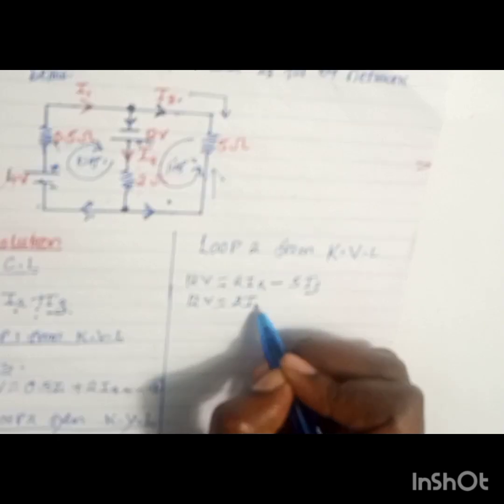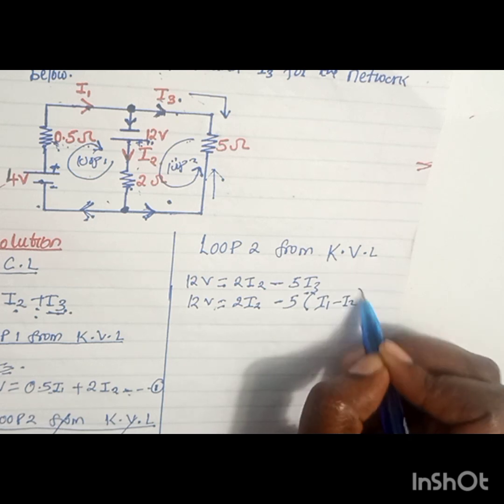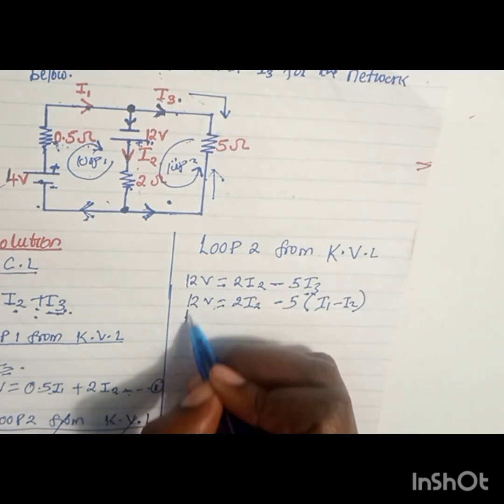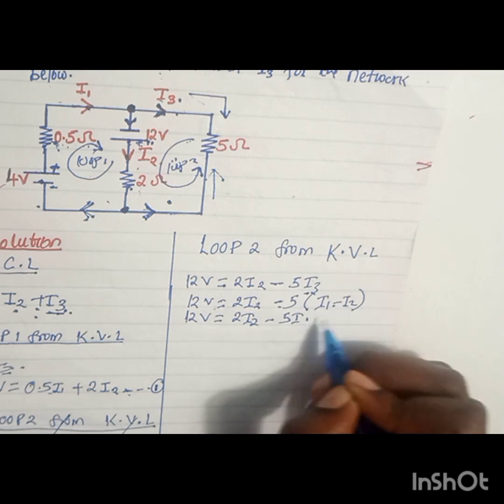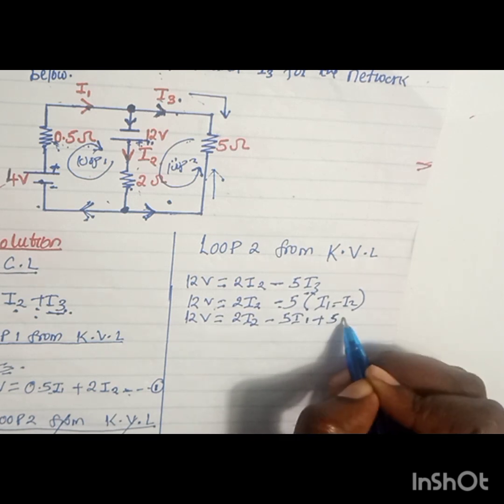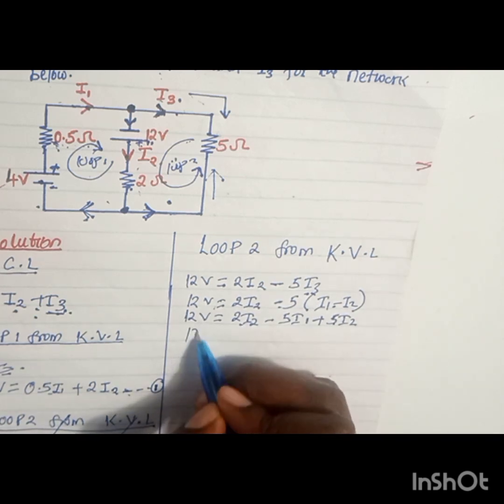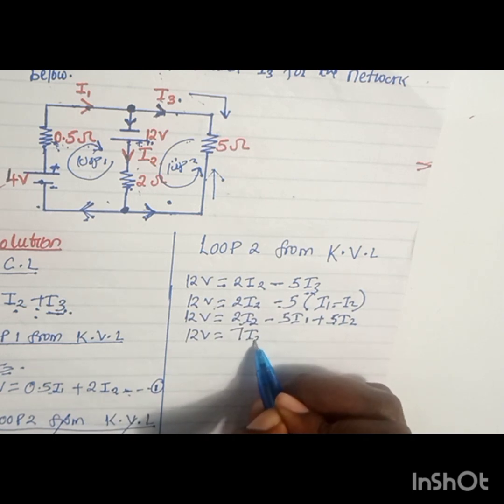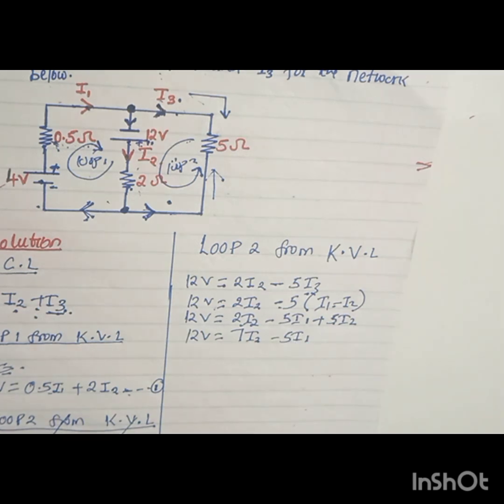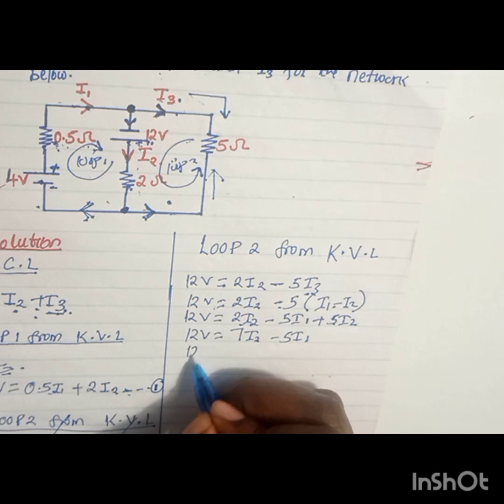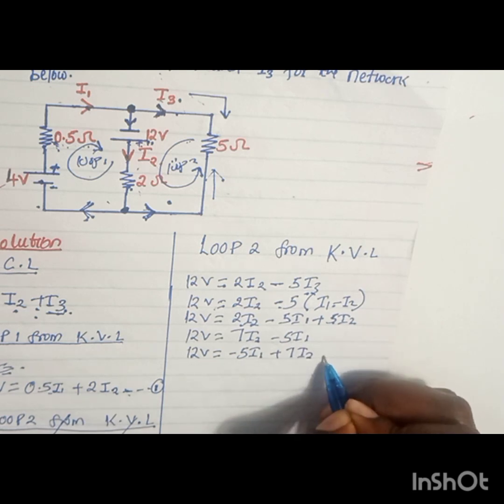I'll have 12V equals 2I2 minus 5(I1 minus I2). Let us open the bracket: 12V equals 2I2 minus 5I1 plus 5I2. Let us collect like terms. 2 plus 5 is 7, so 12V equals 7I2 minus 5I1. We can rearrange these equations so that we always start with I1: 12V equals minus 5I1 plus 7I2. This becomes our equation 2.